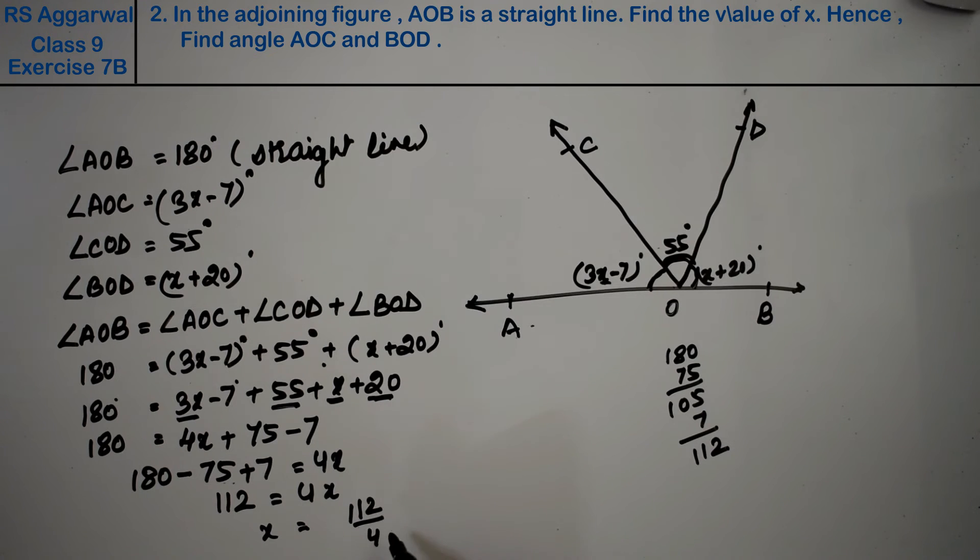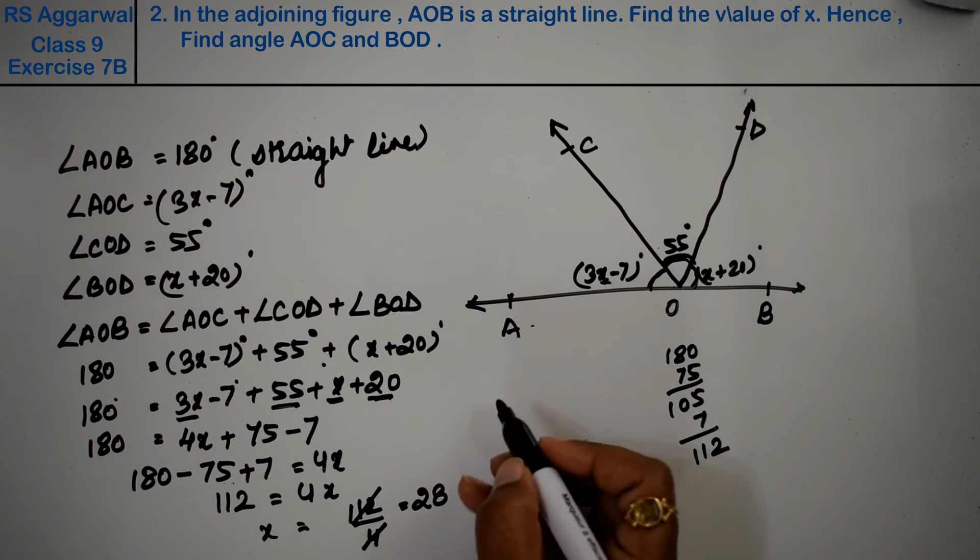112 divided by 4: 4 ones are 4, 4 twos are 8, that's 32. So x equals 28.